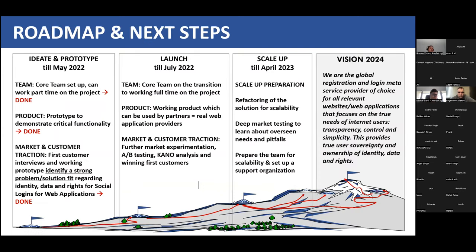Our roadmap: in the near term, we want to invest more time in the project, conduct more market research, and integrate with real web application providers. Next year, we plan to scale up: preparing the team, expanding the community, conducting further market research for overseen needs and pitfalls, and refactoring for scalability. Our 2024 vision is to be the global registration and login meta-service provider of choice for all relevant websites and web applications, providing transparency, control, and simplicity through user sovereignty and ownership of identity data and rights.